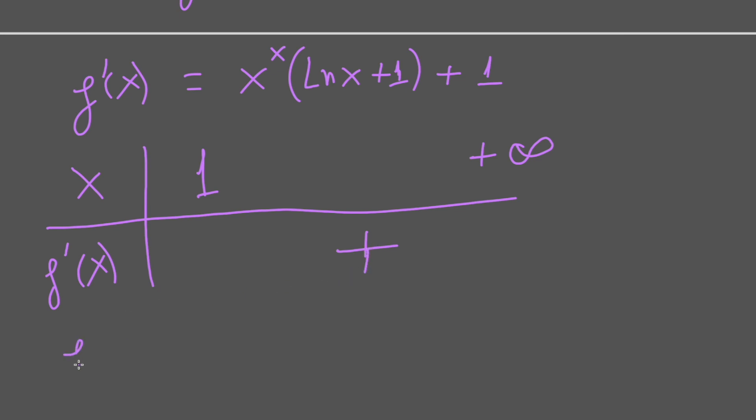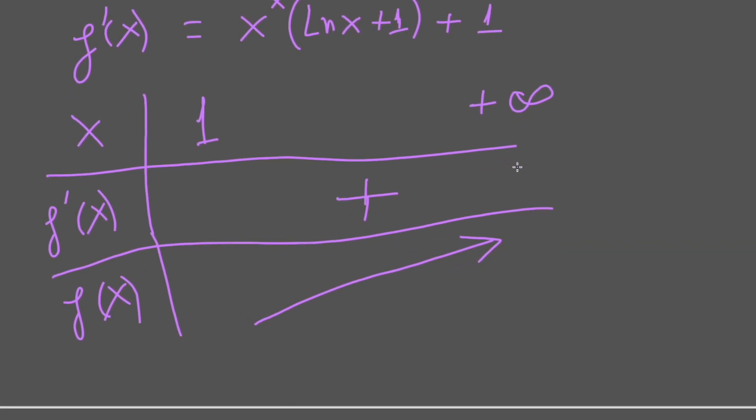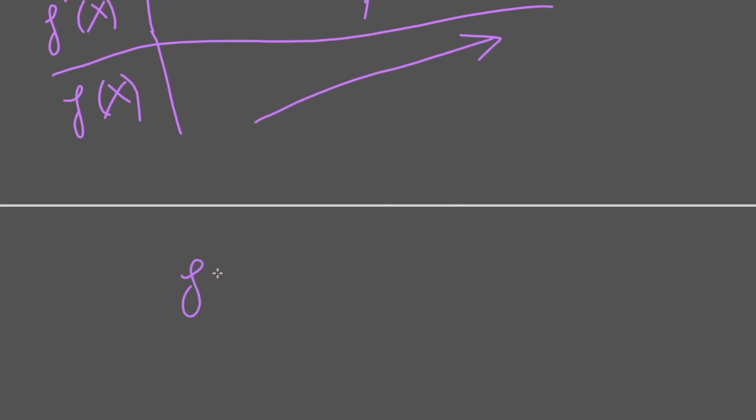So it means f(x) always increasing from 1 to positive infinity. This means f(x) equals 0 has 1 variable only.